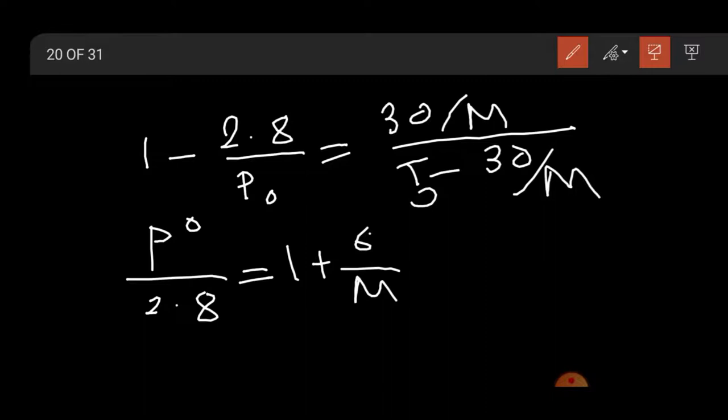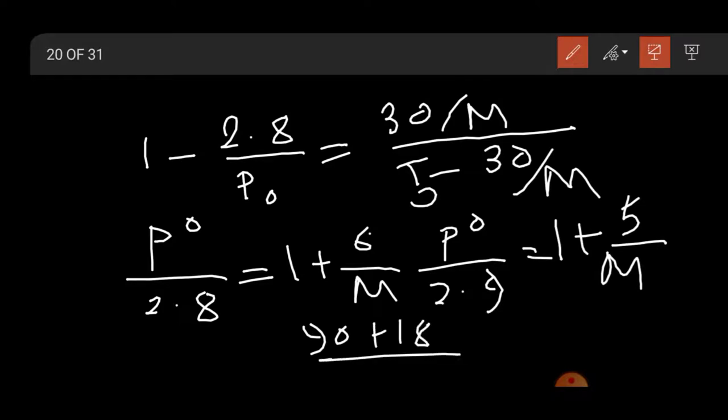When we add 6 to this equation, this equation will be like this: Po by 2.9 is equal to 1 plus 5 by m. The water's moles will be, after adding 18 gram, 90 plus 18 by 18, that is equal to 6 mol.